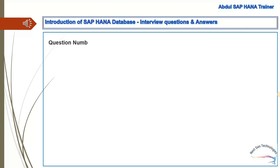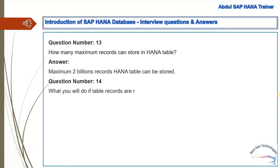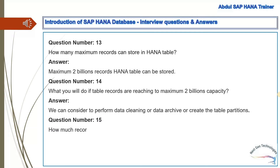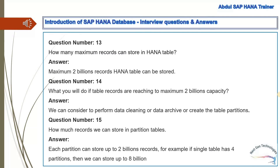Question 13: How many maximum records can be stored in a HANA table? Answer: A maximum of 2 billion records can be stored in a HANA table. Question 14: What should you do if table records are reaching the 2 billion maximum capacity? Answer: We can consider performing data cleaning, data archiving, or creating table partitions. Question 15: How many records can we store in partitioned tables? Answer: Each partition can store up to 2 billion records. For example, if a single table has four partitions, we can store up to 8 billion records.